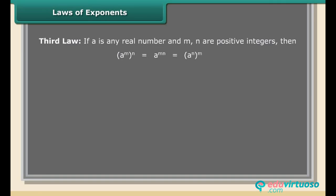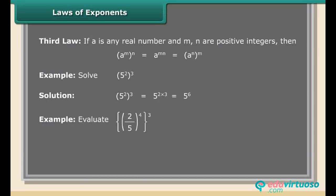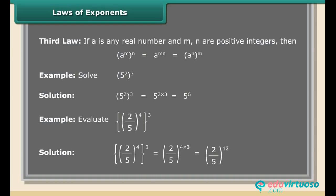Third Law: If A is any real number and M, N are positive integers, then (A raised to the power M) raised to the power N equals A raised to the power MN, which also equals (A^N)^M. Example: (5²)³ = 5^(2×3) = 5⁶. Example: (2/5)⁴ raised to the power 3 = (2/5)^(4×3) = (2/5)^12.